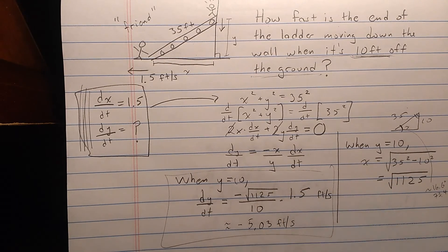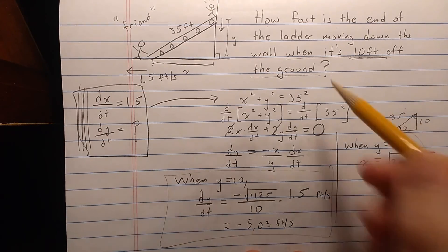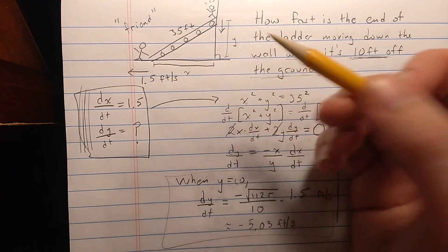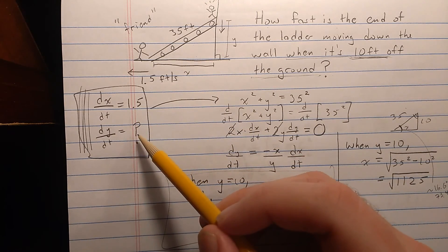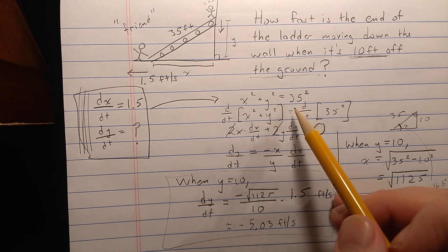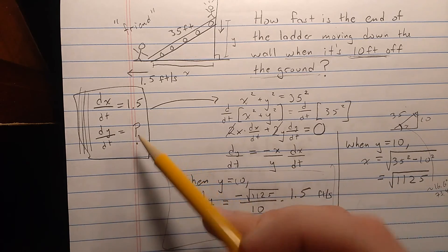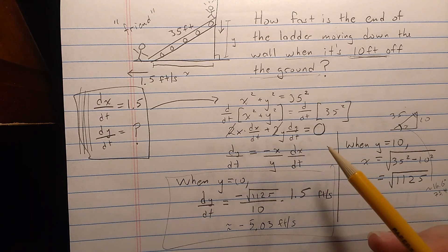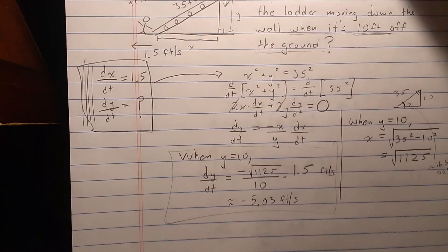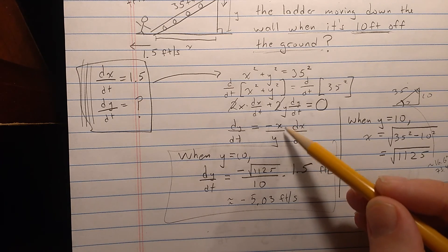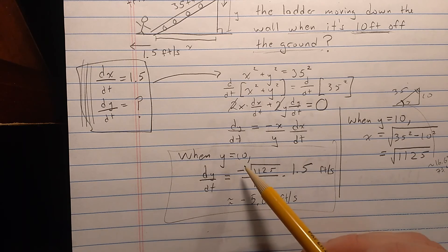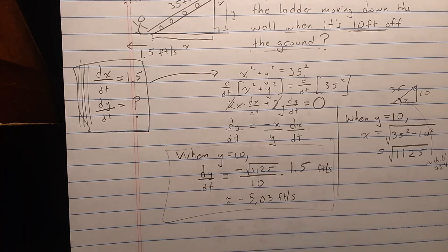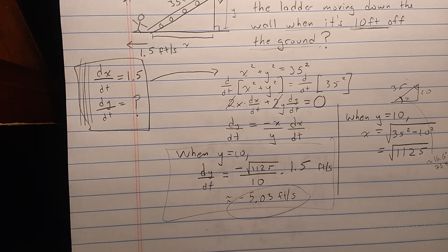Let's review the procedure. Read the problem; if there's no diagram, draw one. Put variables on the picture for quantities changing with respect to time. Identify rates you know and rates you're interested in, then come up with an equation relating the associated quantities. Derive a relationship of the rates by using the derivative with respect to time, being careful to apply the chain rule to variables that are functions of time. That gives you the derivative relationship you want. That relationship may involve the actual quantities themselves, so at the end of the problem, go to the particular time you're interested in, use those quantities at that time, and get the relationship between the derivatives.